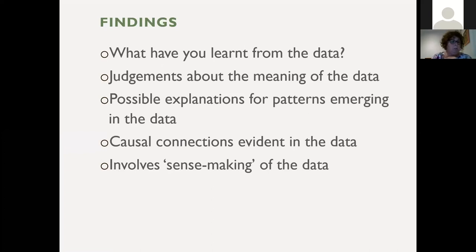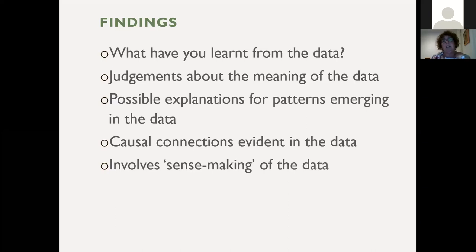Scriven talked about rendering judgment being based on values, beliefs and expectations. Other theorists talked about professional know-how and experience. Others talk about stakeholders and sense-making. It doesn't really matter to me whether it's the evaluator rendering judgment based on values, beliefs and expectations, through professional know-how, or through stakeholder sense-making. The main issue is that it's transparent and able to be unpacked and explained as to how it happened.